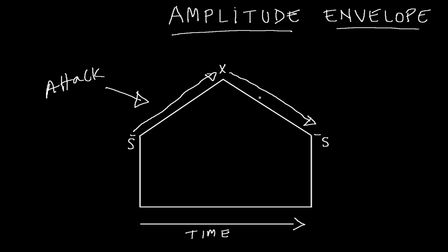This angle coming back down tells us, in time from left to right, how fast the sound goes back down to silence again from that loudest peak. This part of the envelope is called the decay. That's a simple two-stage amplitude envelope.